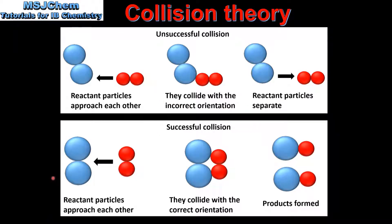Our next example is a successful collision. The reactant particles approach each other but this time they collide with the correct orientation. A chemical reaction takes place which results in the formation of products.